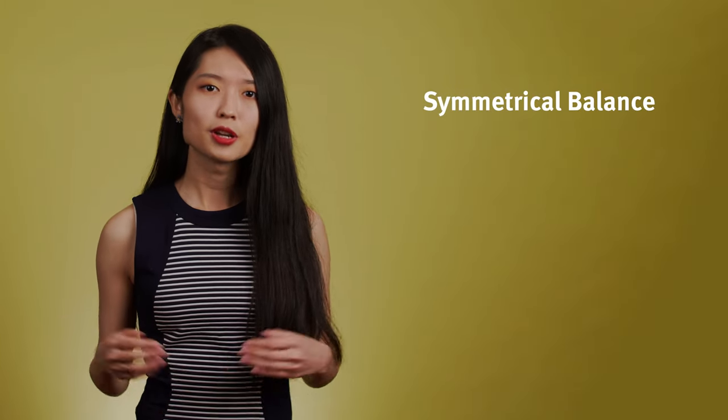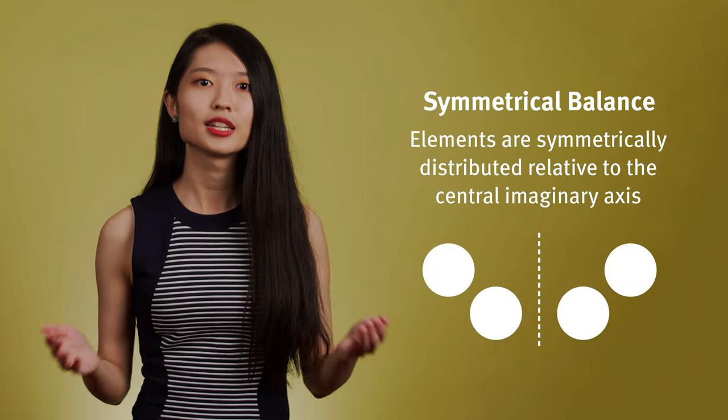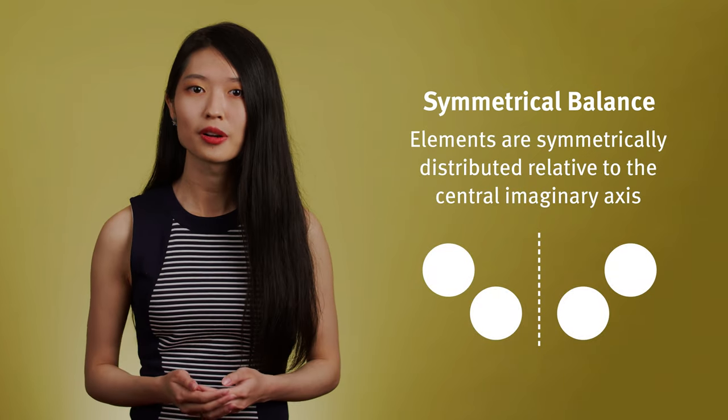In this video, I'm going to talk about three types of balance. First, there's symmetrical balance. In symmetrical balance, elements are symmetrically distributed relative to the central imaginary axis. My favorite way to think about this is to imagine the design on a piece of paper — I could fold the design in half and it would be the same on both sides.